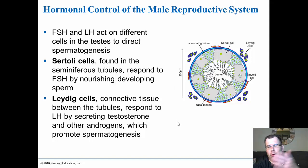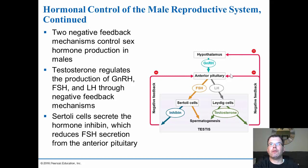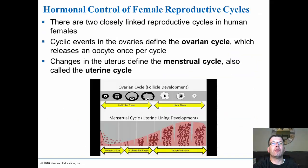Two negative feedback mechanisms control sex hormone production in males. Testosterone regulates production of GnRH and LH/FSH, shutting them down when levels are sufficient. Additionally, inhibin — secreted by the Sertoli cells — reduces FSH secretion from the anterior pituitary. Together, these maintain constant but not overwhelming sperm production.